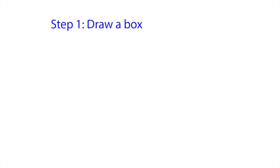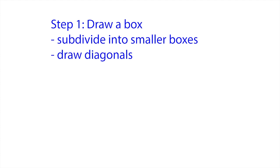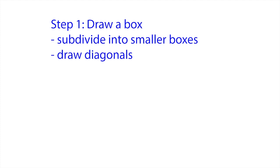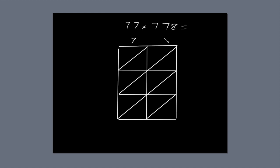Draw a box. Subdivide it into smaller boxes and draw diagonals through them. Next, write the first number, 77, along the top of the box, so each digit lines up with a column.